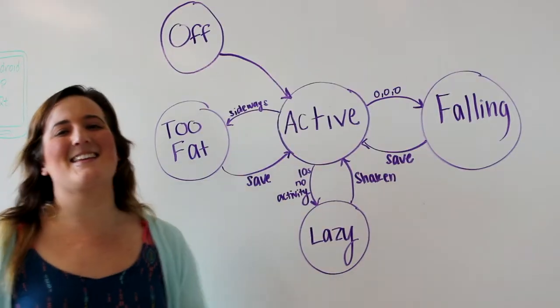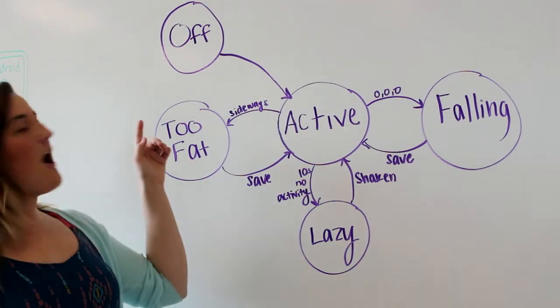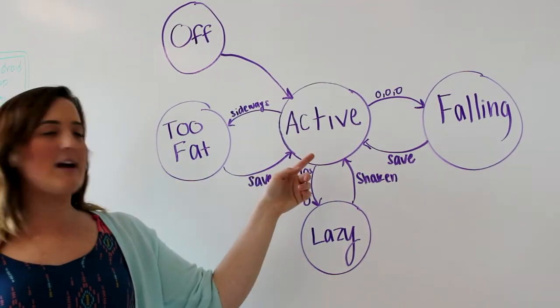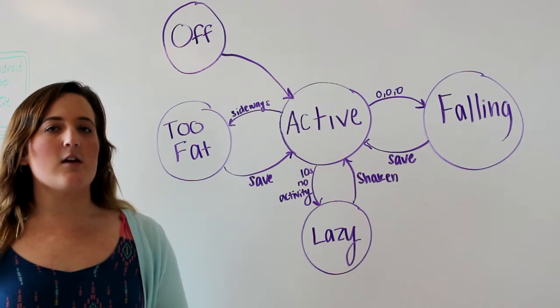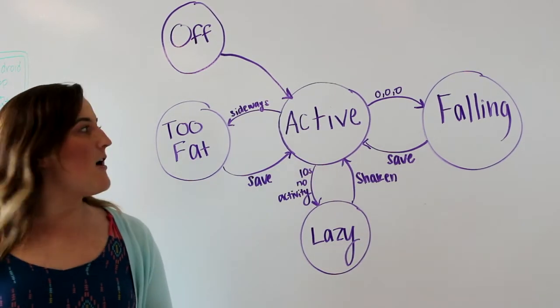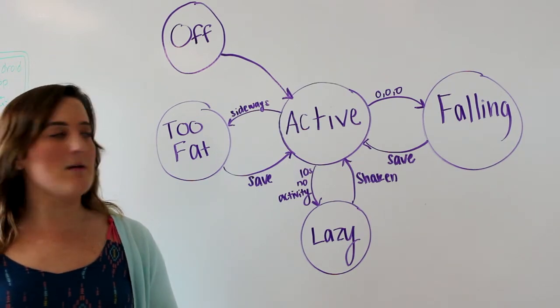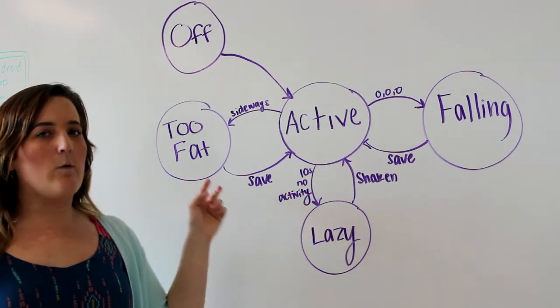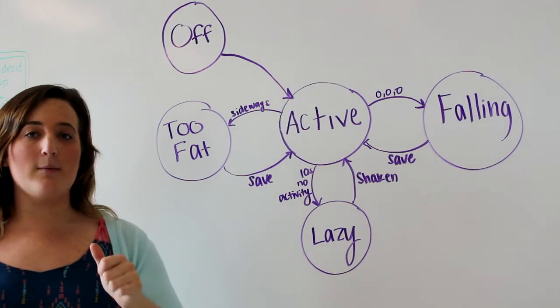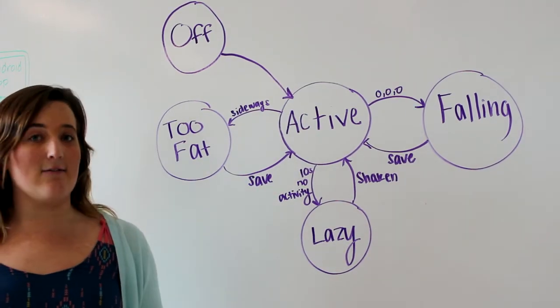This is our Lazy Cat state diagram. First we start off in the off state, from there we move into the active state. From the active state, we can go into three different states. First, if the cat falls over sideways, it's too fat to get up, and it moves into the too fat state. From there, it can only move back into active if you go up to the cat and press the button to save the cat.